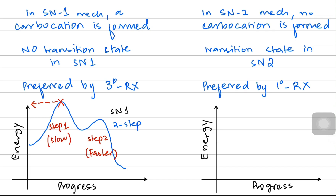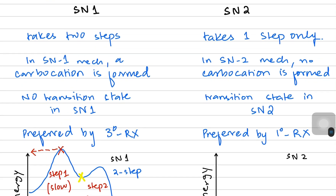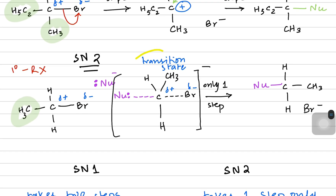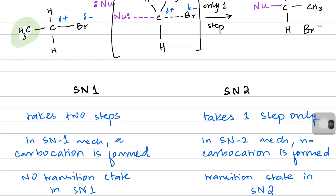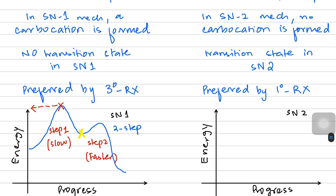For the SN2 mechanism, since it is a single step from transition state to product, there is only one peak. At the peak the transition state is formed — there is no carbocation, only the transition state. It is a one-step process with no carbocation formed.